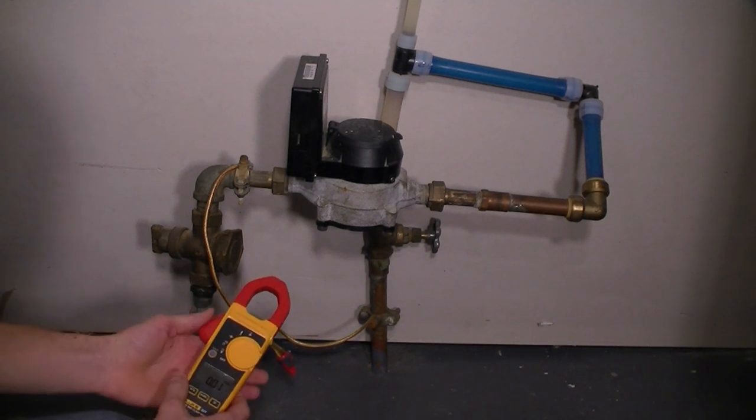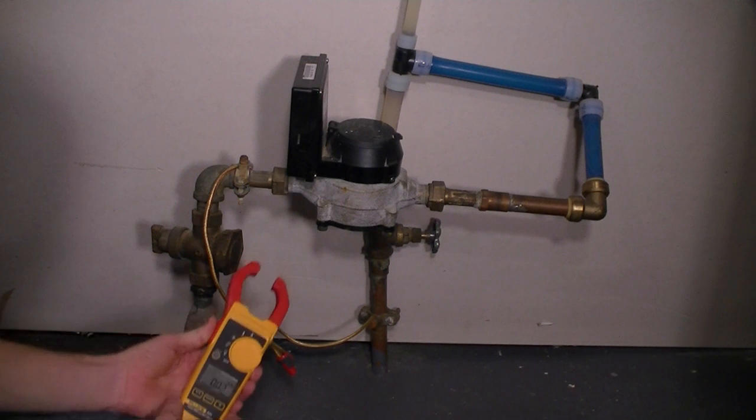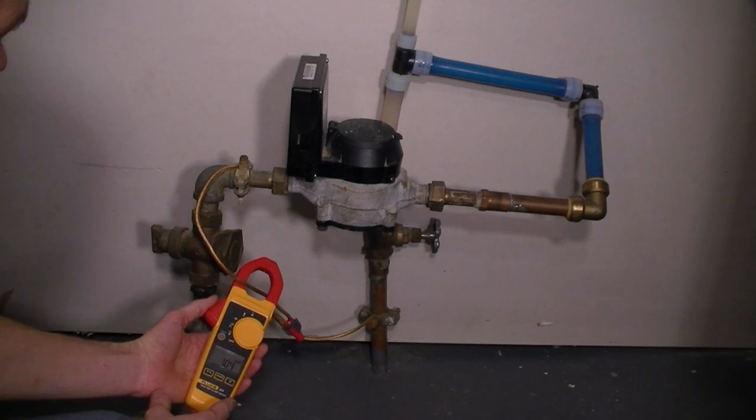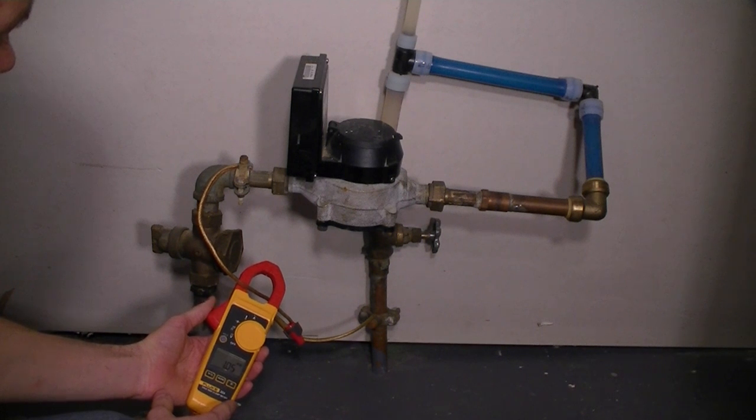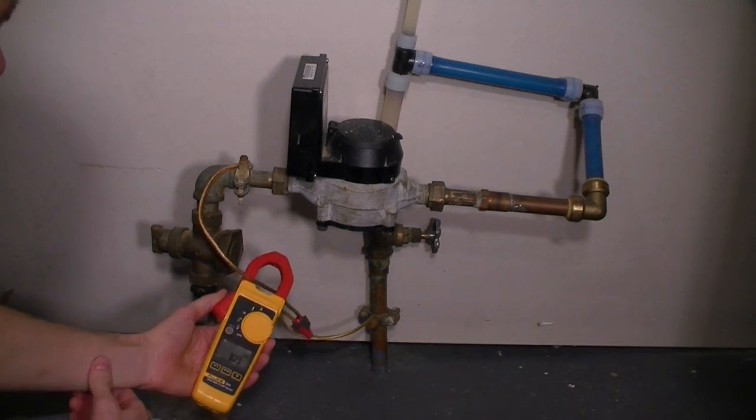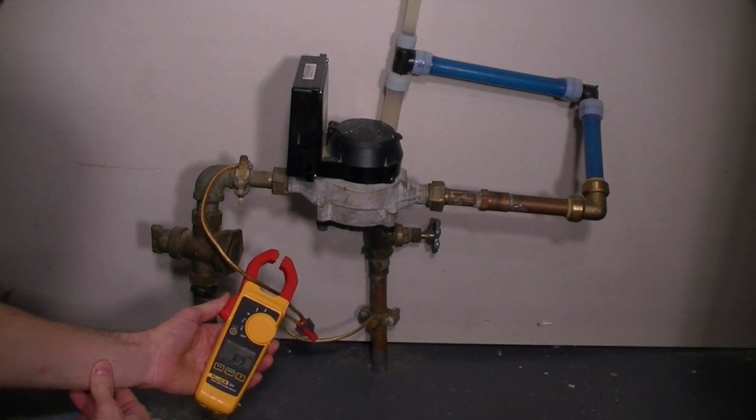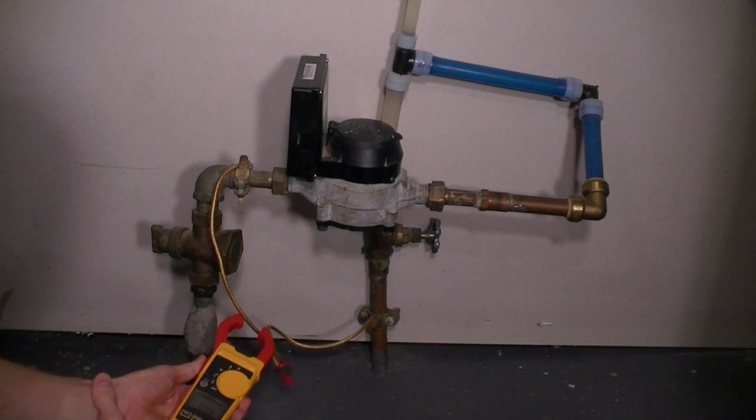But here, as you can see, we have 1.16 amps over the wire. We'll check it again. 1.04. It's going to vary as neighbors in the area, because this current doesn't necessarily come from my house. I can actually shut off my main circuit breaker and the current can remain. So this could come from neighbors as well.